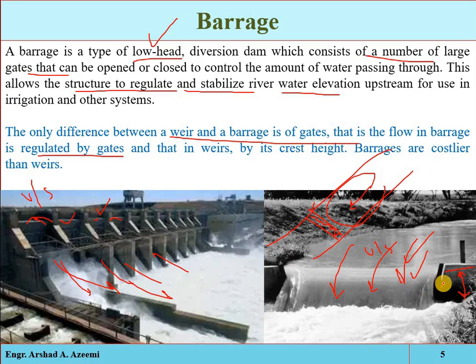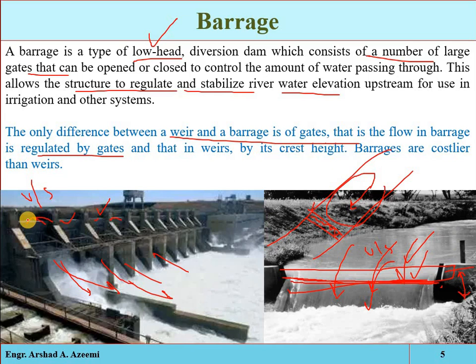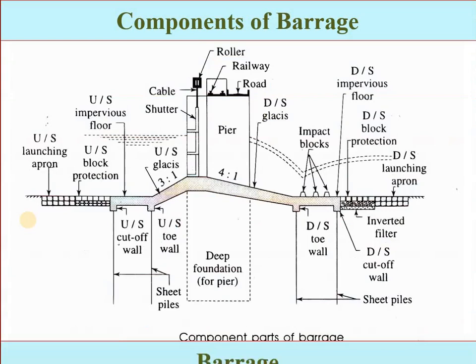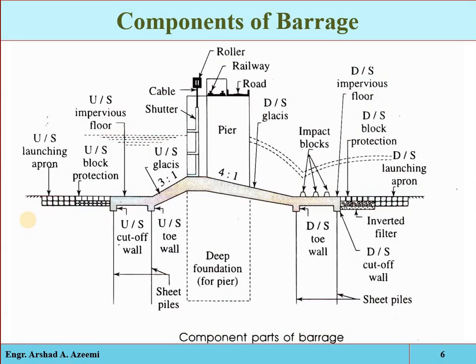In a weir, the water level at the upstream side depends on the elevation of the crest — a higher crest means a higher upstream water level. In a barrage, it depends only on the opening and closing of gates. Now looking at the side view of a barrage: if that is the natural river and here we have to take out an irrigation canal, then we construct a barrier. In a barrage, the main portion is where the gates will be operated — the central position where gates are closed and opened.